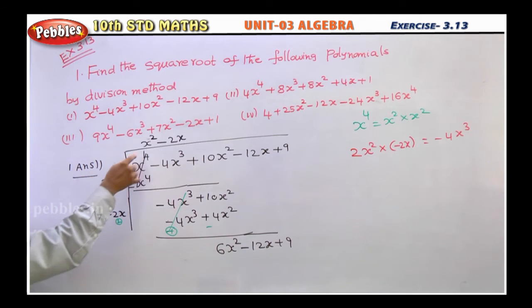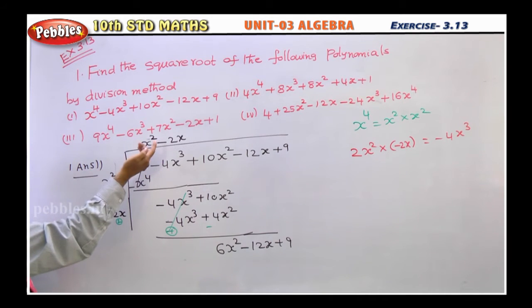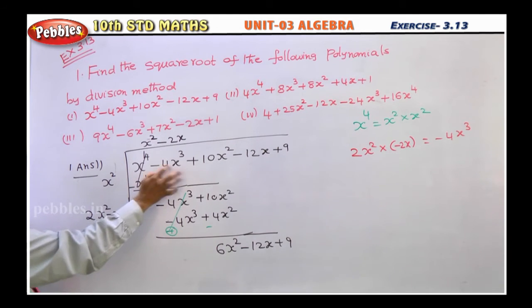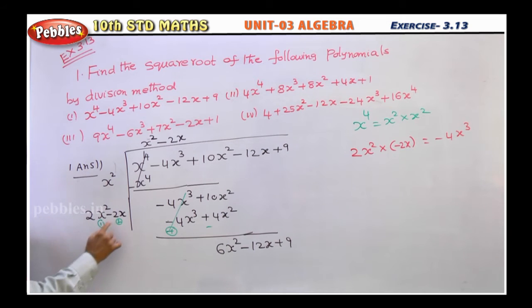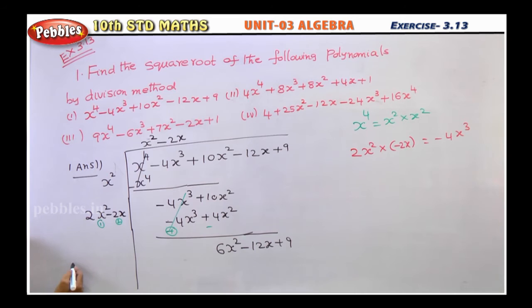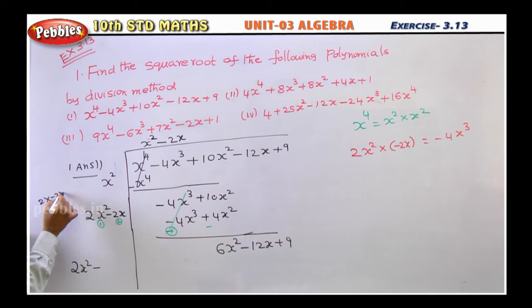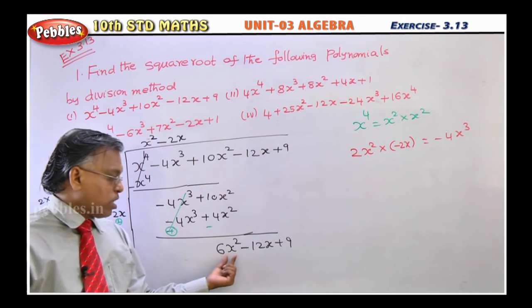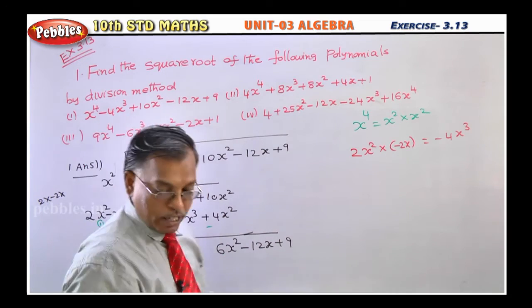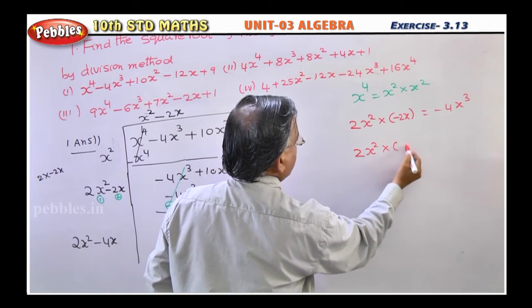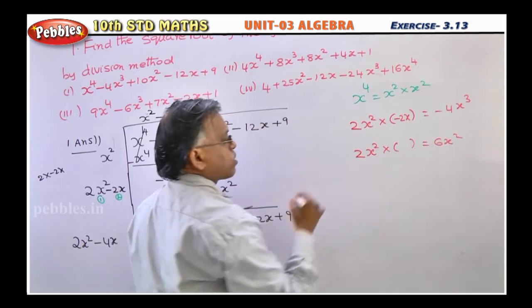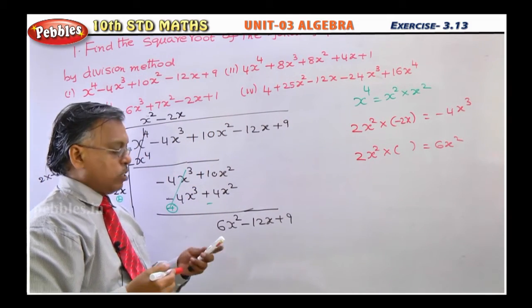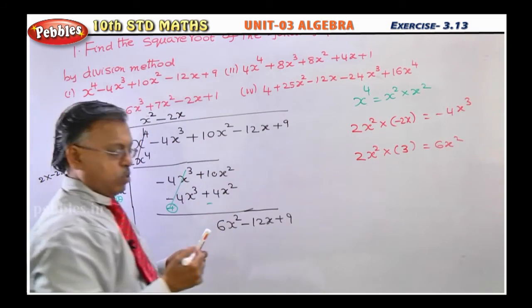Listen carefully. Here x², x², x⁴ — you double this value: 2x². Then if you multiply by minus 2x, that term is eliminated. Next, write 2x² as it is, but this time you should double the last quotient term, not the original. That is a very important point — note it down. 2 into minus 2x gives minus 4x. Now, 2x² must be multiplied by 3 to get 6x², since you need to eliminate 6x².